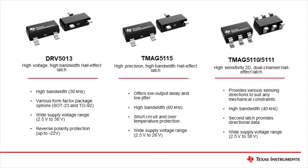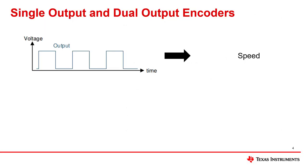The TMAG5110 and the TMAG5111 provide two high bandwidth 40 kHz Hall Effect latches in one single package, available in various sensing directions in order to provide design flexibility to suit any mechanical constraints that may be present in your system. One latch can be used to measure the speed, while the second latch provides directional information.